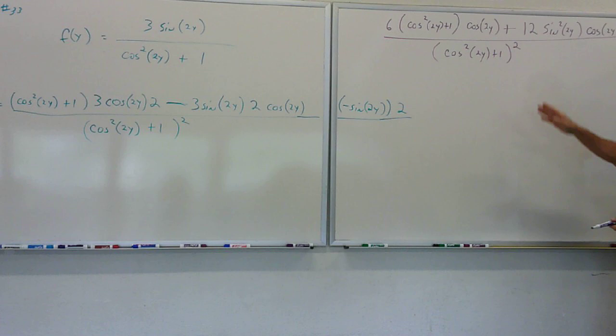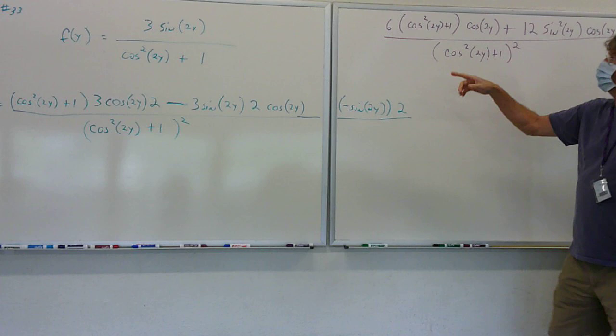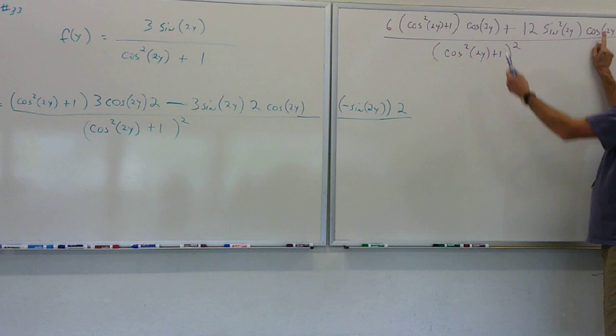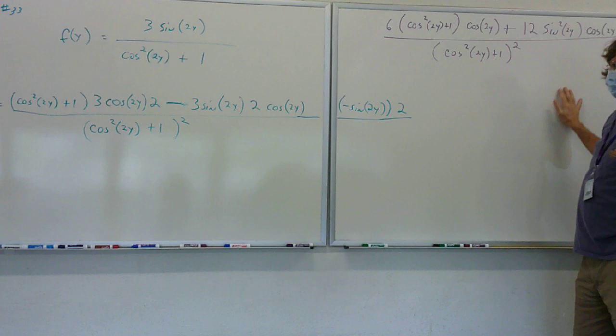Then I would start looking at factoring some things out. I would line my plus sign up here and decide what could factor out. The cosine 2y comes out of both of them, doesn't it? Now, I wouldn't try to mess with this.